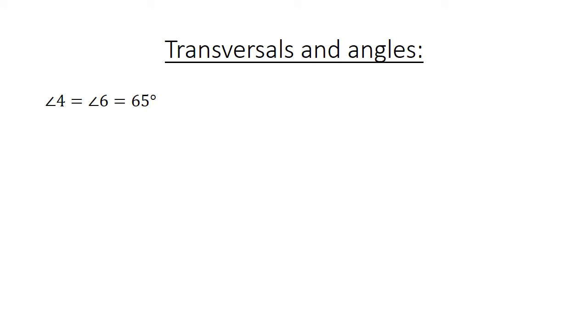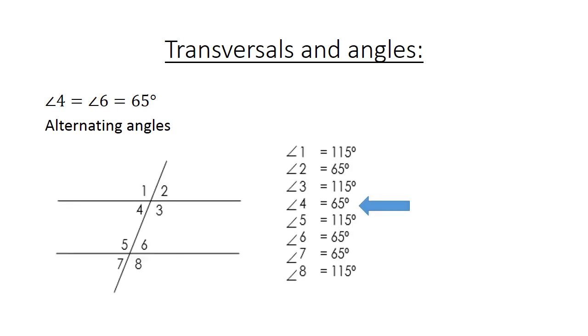Angle 4 equals angle 6 equals 65 degrees. We call this alternating angles. Here we have angle 4, angle 6. Alternating angles.